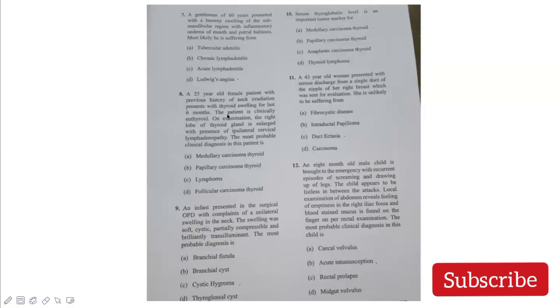A 25-year-old female with previous history of neck irradiation presents with thyroid swelling for the last 6 months. Patient is clinically euthyroid. On examination, right lobe is enlarged with ipsilateral cervical lymphadenopathy. Previous history of neck radiation can mark papillary carcinoma of the thyroid. An infant presents with unilateral neck swelling that is soft, cystic, partially compressible and brilliantly transilluminant. Among these options, only cystic hygroma is brilliantly transilluminant and compressible. Remember that cystic hygroma is also associated with Turner syndrome.